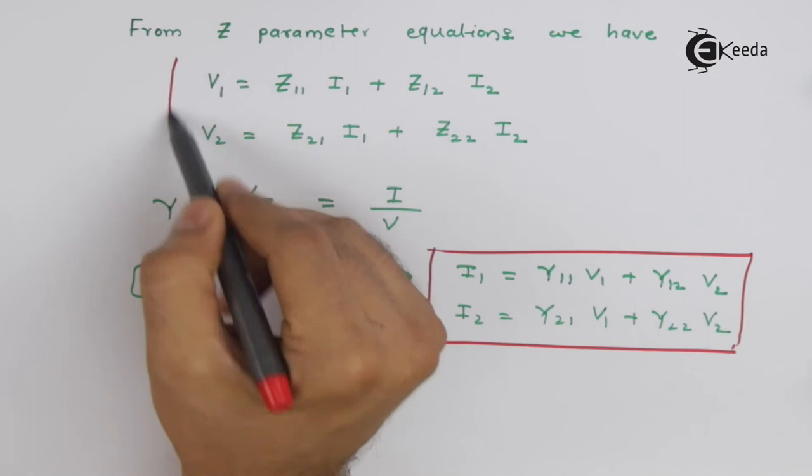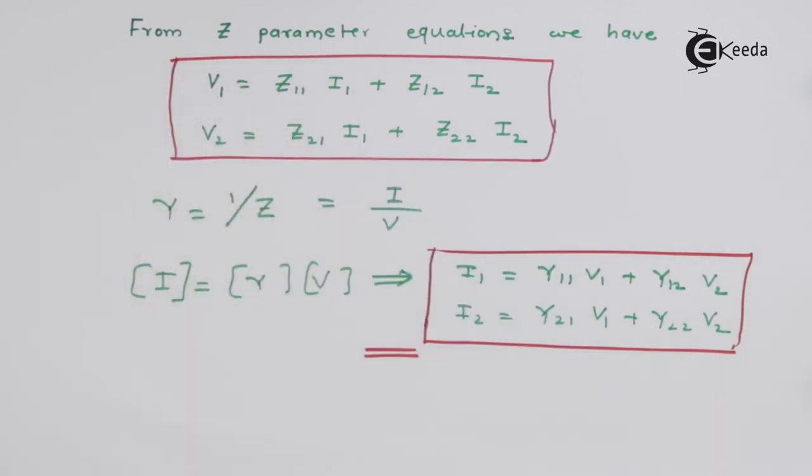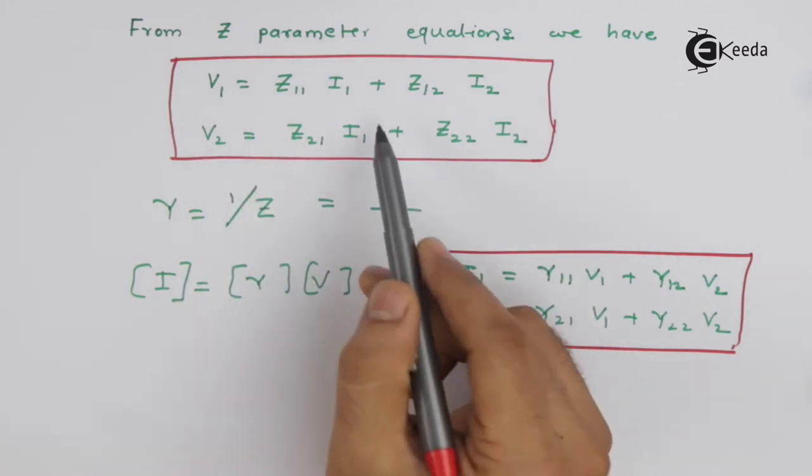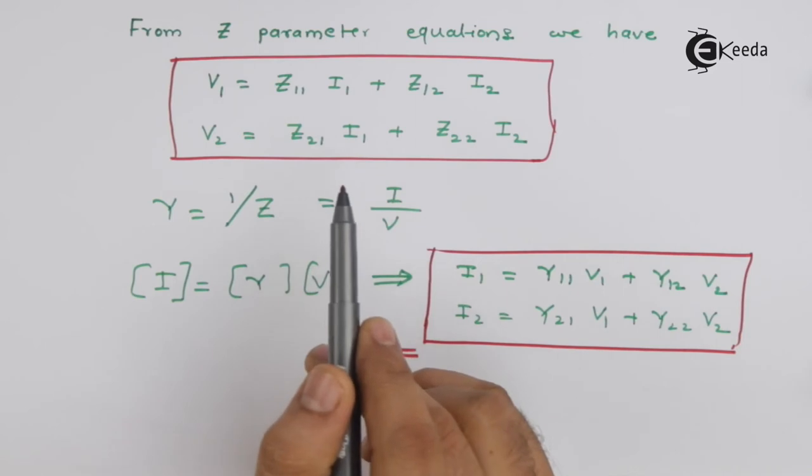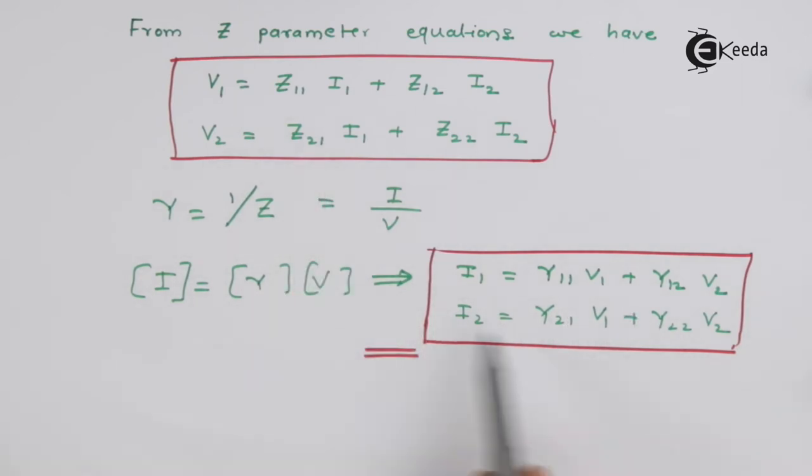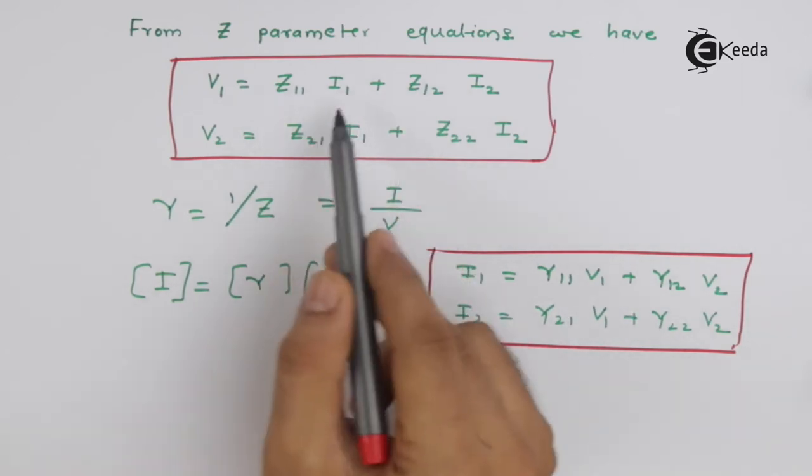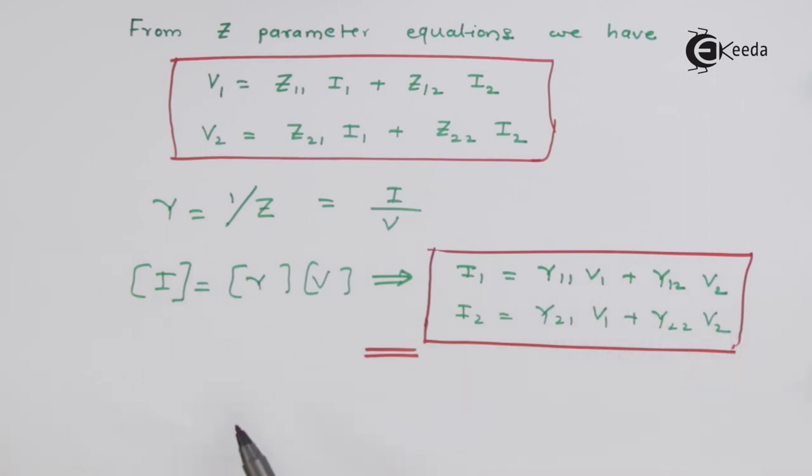But we have these equations right now and what we want to get is Y in terms of Z. So we will start with these equations and rearrange them in such a way that this equation will be I1 equal to something into V1 and something into V2, and that something will be nothing but in terms of Z.